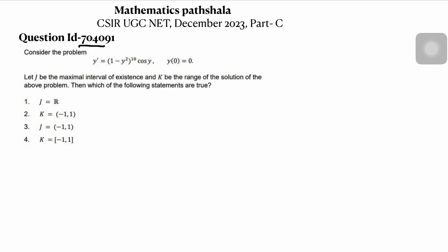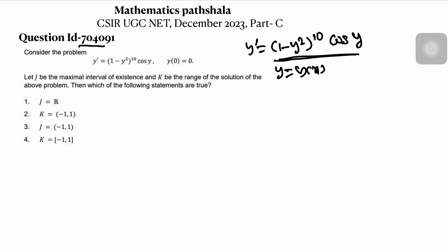Here what is given: y' = (1 - y²)^10 · cos(y). You can see that here, if y is a function of x, there is no x explicitly. So this is called the autonomous system — this is the autonomous differential equation. So y' can be written as f(y), where f(y) is this expression.